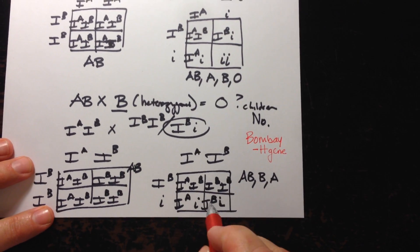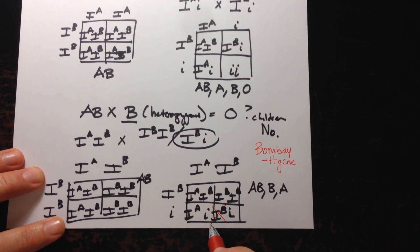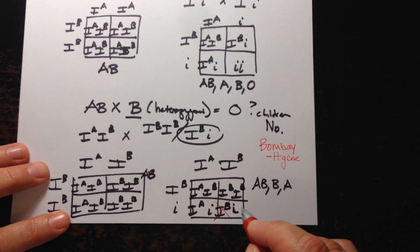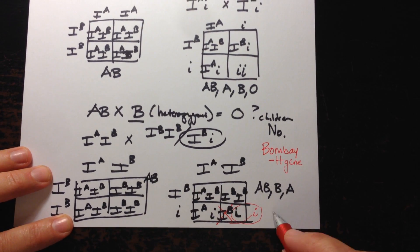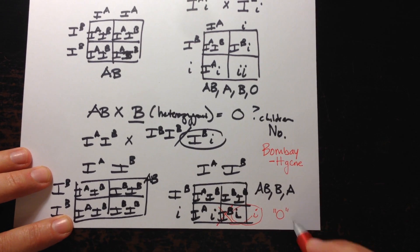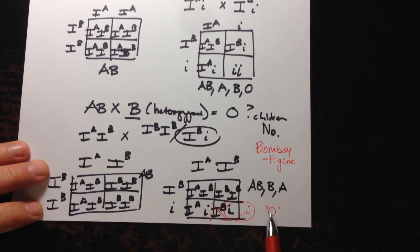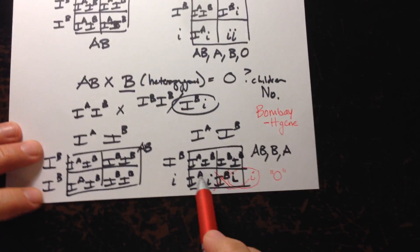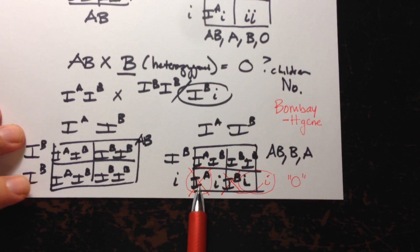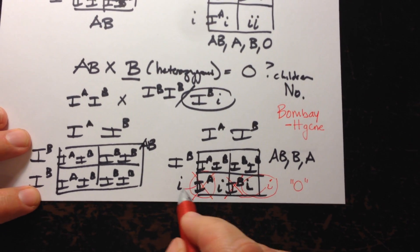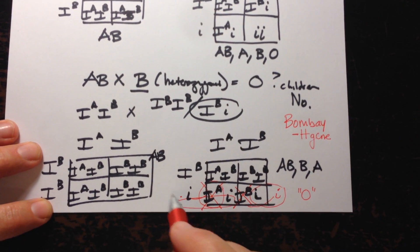So literally what can happen is in this example here, if I cross this out with a red and I replace this with an i, a little i, this can act as a type of O blood. But it is known as Bombay phenotype type O. And of course it could happen here as well because there's another homozygous dominant allele. So that could act as a type O blood as well.